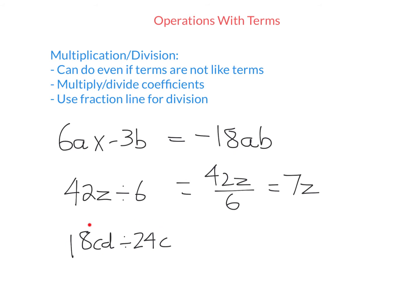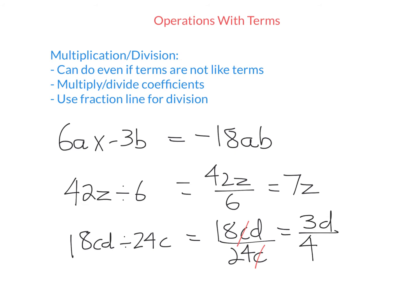This one here is a little trickier. I'm going to write it as a fraction: 18cd over 24c. Now, if you have a fraction and the same pronumeral is on the top and bottom, you can cross it out. So simplifying 18 over 24 — the highest common factor of 18 and 24 is 6. Divide 18 by 6, divide 24 by 6, and there's still a d on top. And we're done.